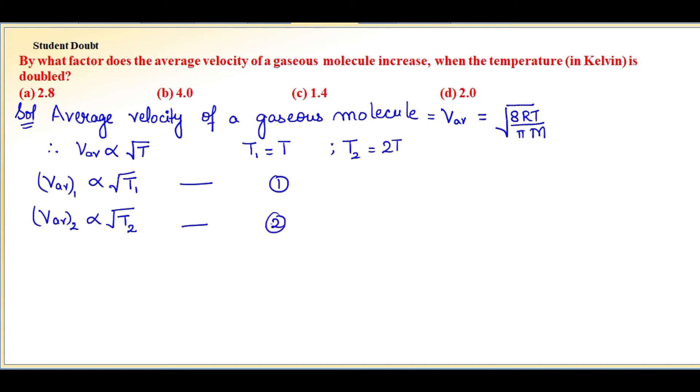To find the factor, we need to find v_av2/v_av1. We'll divide equation ② by equation ①.